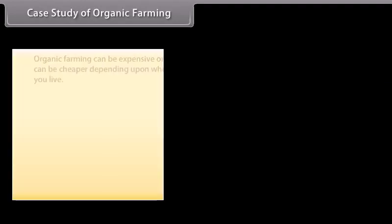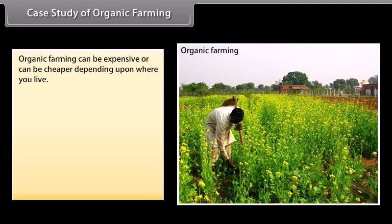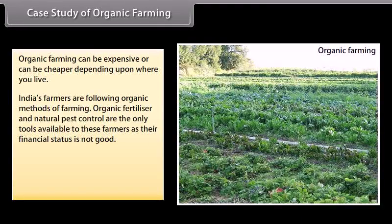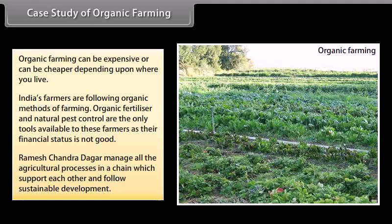Case study of organic farming: Organic farming can be expensive or cheaper depending on where you live. India's farmers are following organic methods of farming. Organic fertilizer and natural pest control are the only tools available to these farmers as their financial status is not good. Ramesh Chandra Dagar manages all the agricultural processes in a chain which support each other and follow sustainable development.